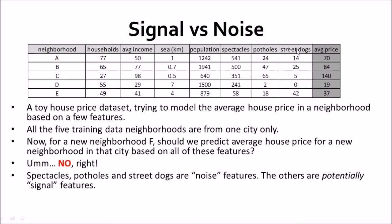For street dogs, similarly it doesn't make sense to include this feature. The signal features are: the average income per household, proximity to the sea — the nearer to the sea a neighborhood is, the higher will be the price — and the number of households. We need to track which are noise and which are signal features and get rid of the noise, which would otherwise lead to overfitting.